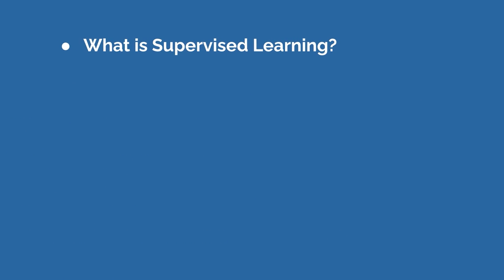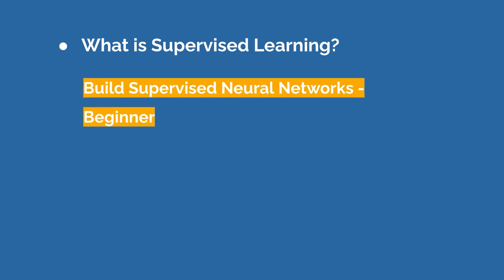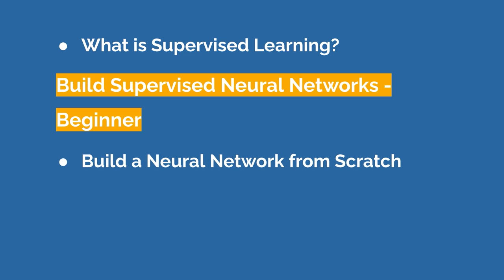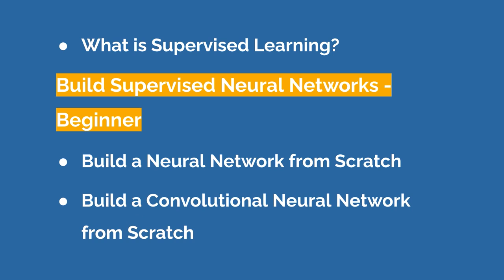Now that we've talked about applications, let's talk about what we're going to learn in this course. First, we'll cover what supervised learning is. Then we're going to build beginner supervised neural networks — this course is beginner friendly. If you don't know anything about machine learning, you can still follow along. We're going to build a neural network from scratch, and then a convolutional neural network from scratch, slowly building up our skills from simple to more complicated.